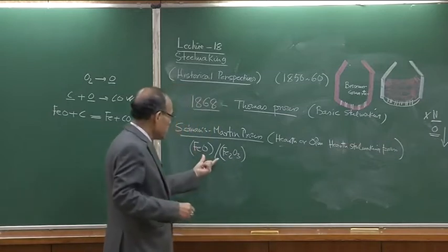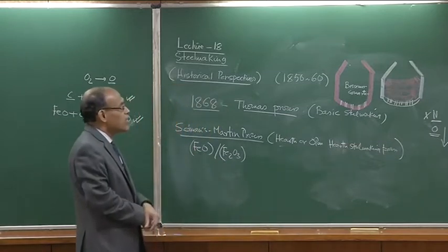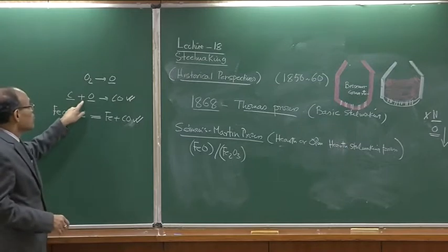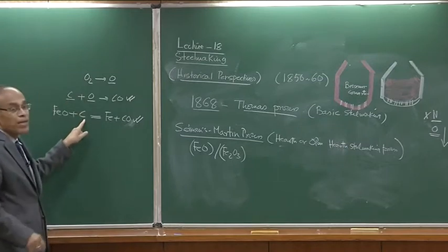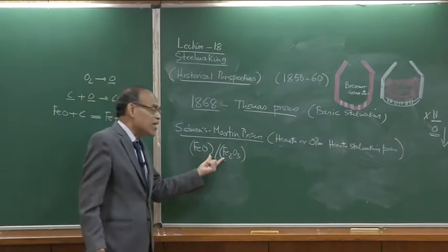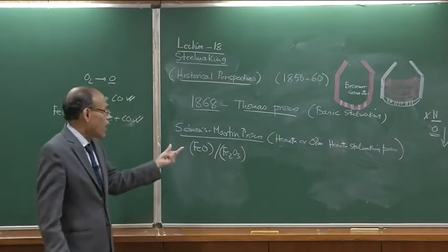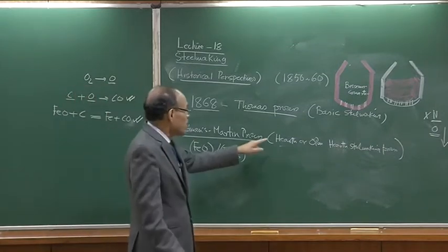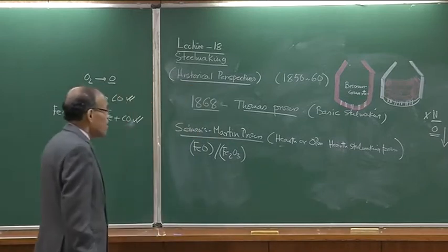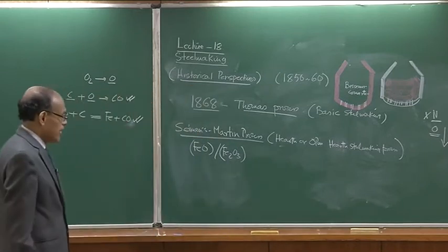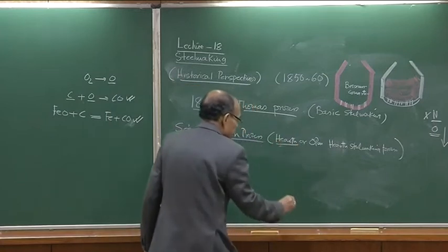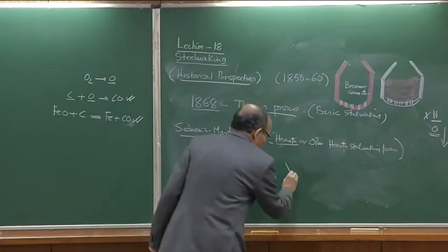Because FeO is used as an oxidizing agent, the net exothermic reactions have been replaced by endothermic or weakly exothermic reactions. As a result, in the open hearth process you require supply of external heat. This worked on a different kind of system.